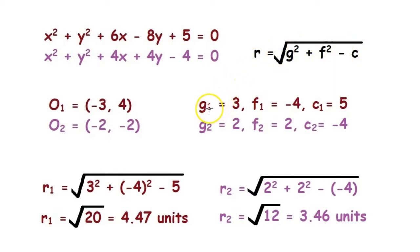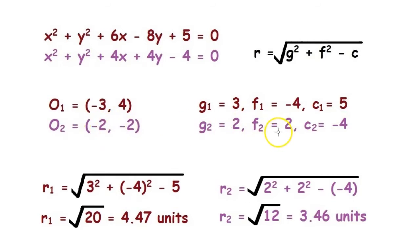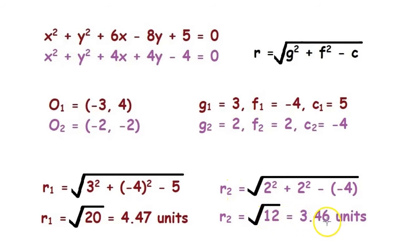We use the formula R equals the square root of G² + F² − C. For the first circle, since the center is (−3, 4), G1 equals 3, F1 equals −4, and C1 equals 5. For the second circle, since the center is (−2, −2), G2 equals 2, F2 equals 2, and C2 equals −4. By substituting these values, we find R1 equals the square root of 20, which gives us approximately 3.46 units. Now that we have the values of both radii, we calculate the distance between the two centers.